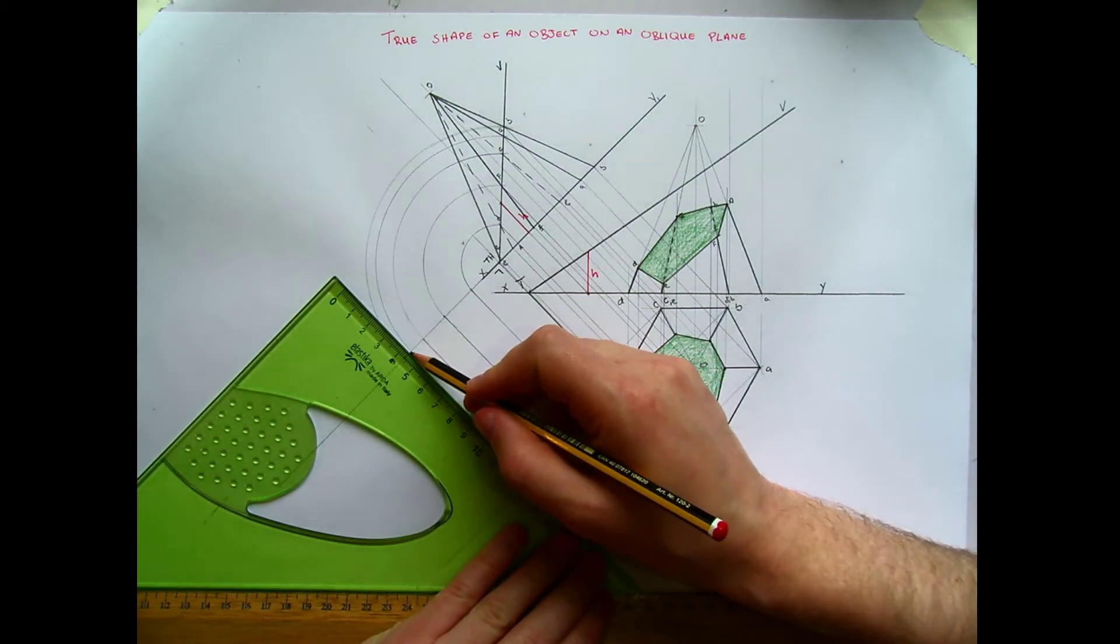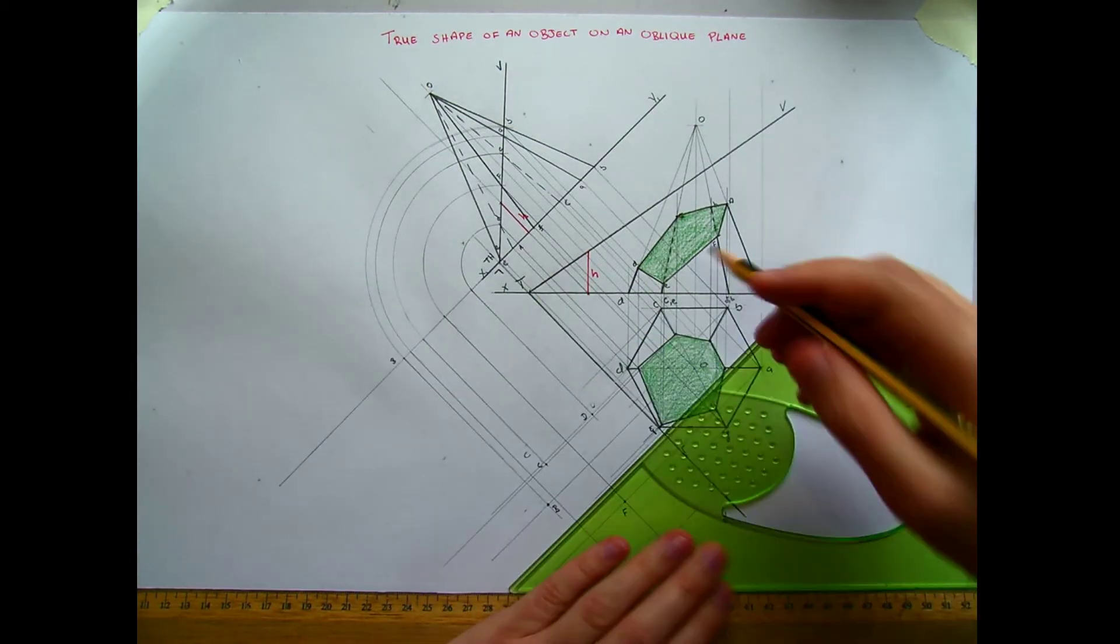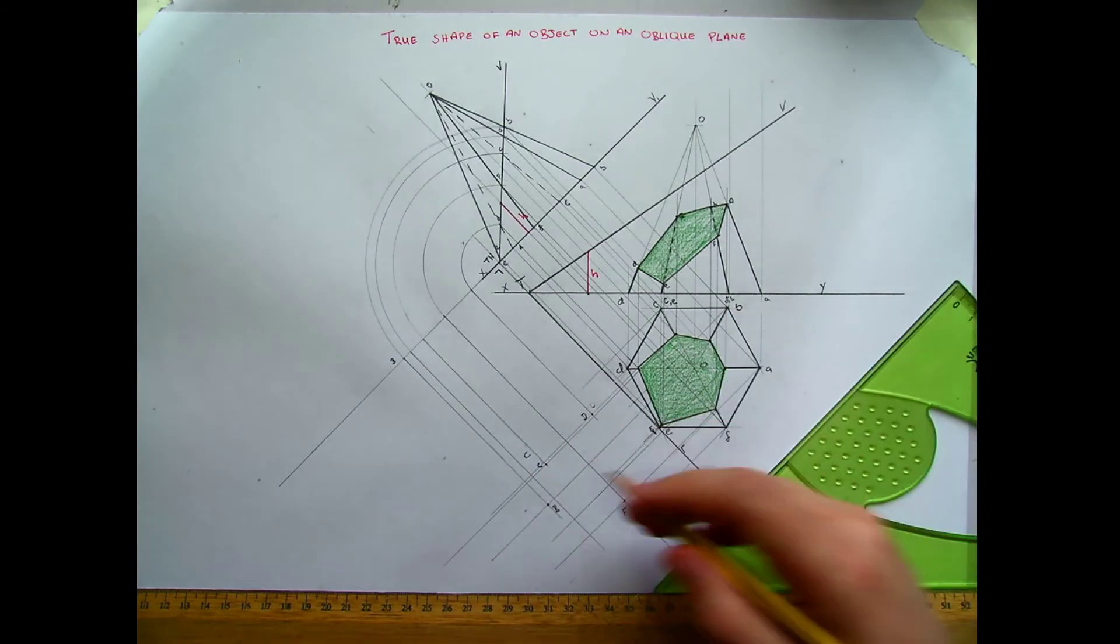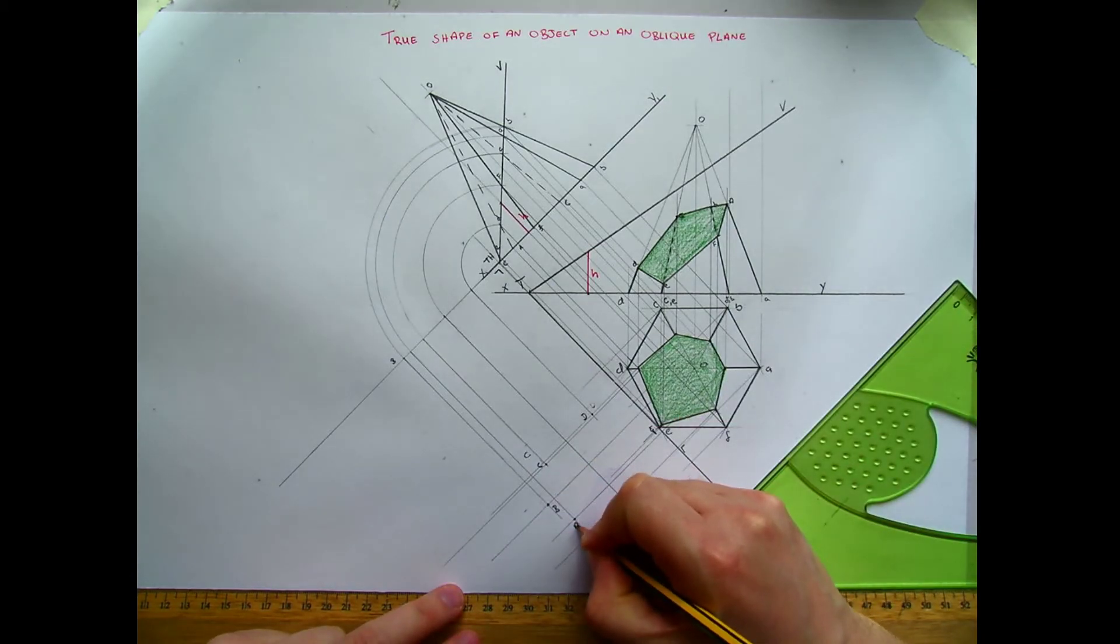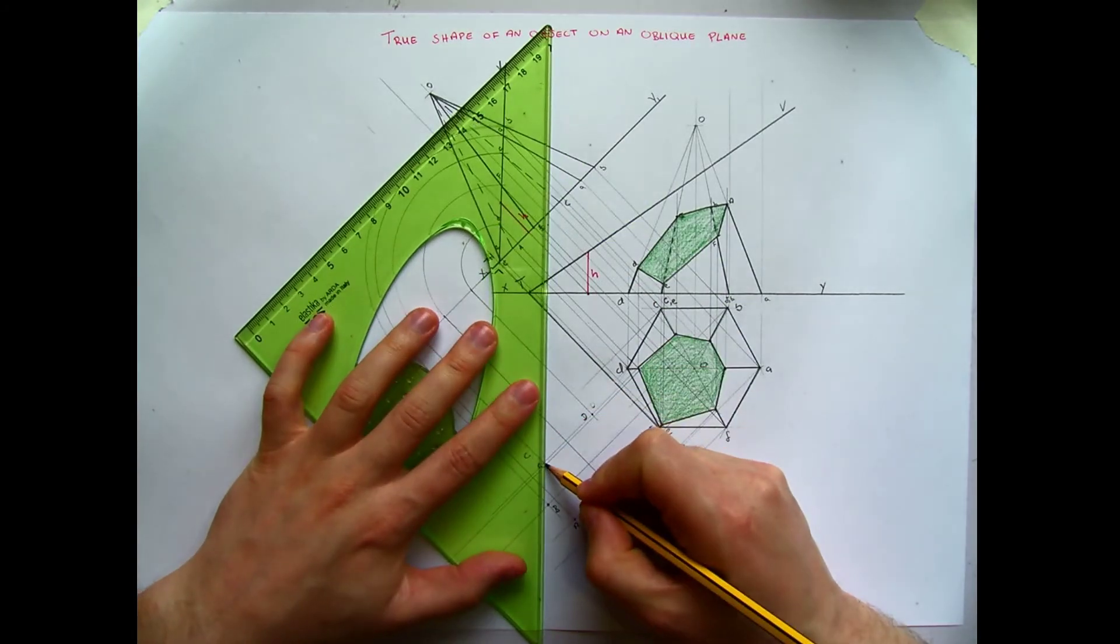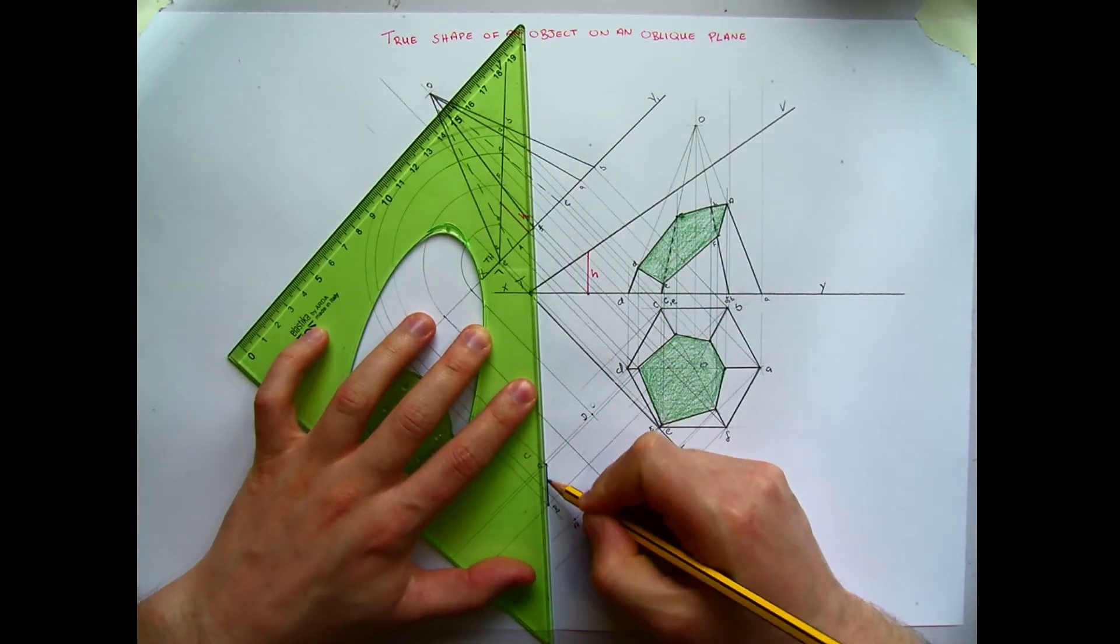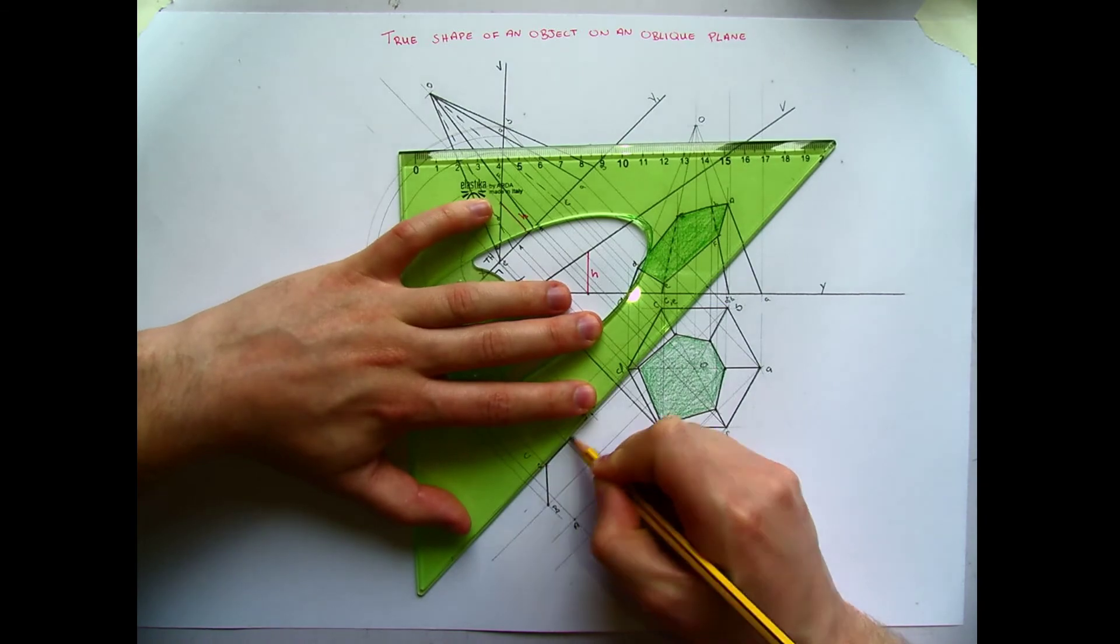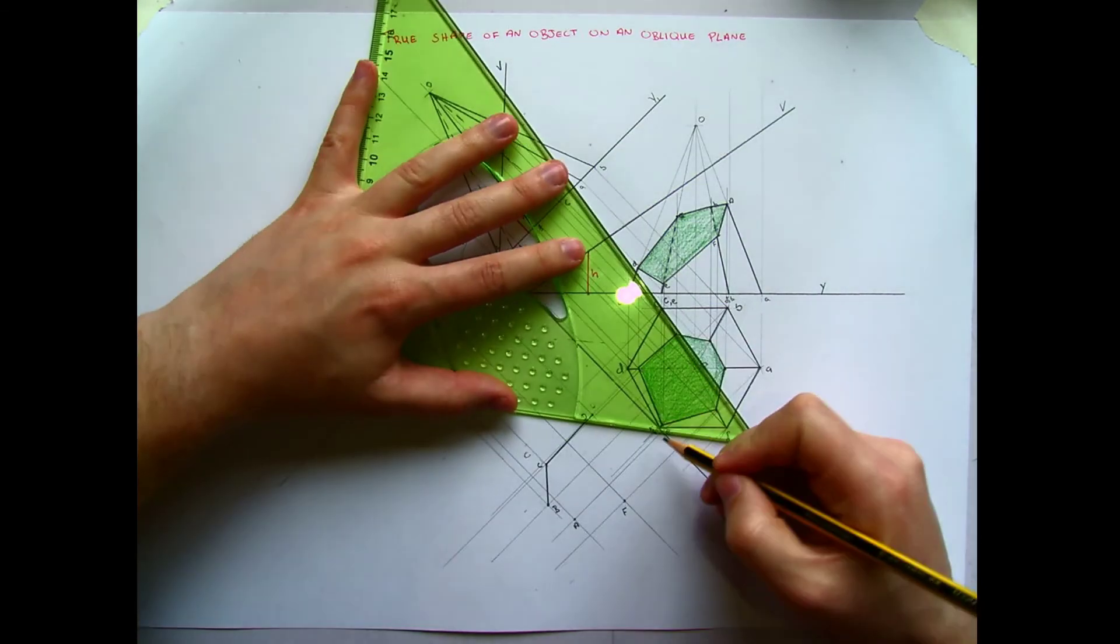And project it down from where it is up in the elevation. Or the auxiliary elevation. And this gives me point a down here. So now what I have is I have all of my points. At C goes to B. Which goes to D. Which goes to E. And so on.